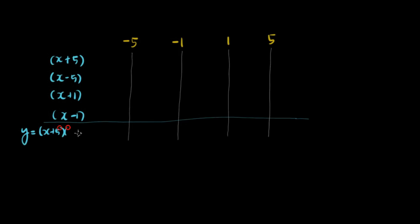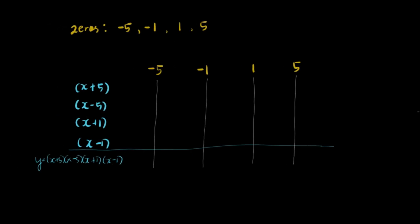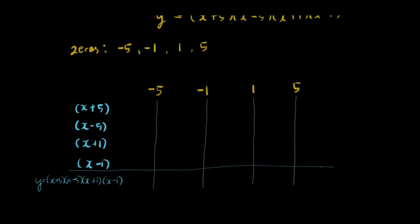We have y equals the product of everything, x plus 5. So we have y equals x plus 5, x minus 5, x plus 1, and then x minus 1. Now we're ready to put the signs on our table of signs.